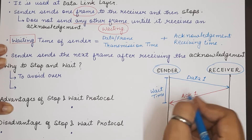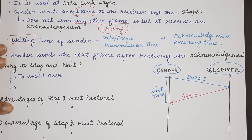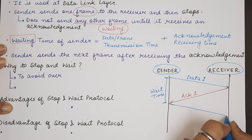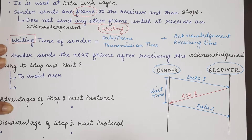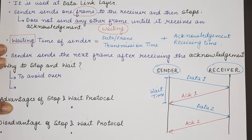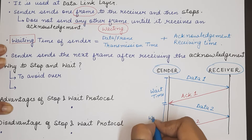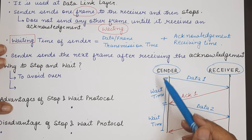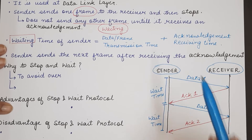Once the sender gets back ACK 1 — the acknowledgement of data 1 — the sender will generate a new data frame and send it to the receiver. Let us say this is data frame 2. Once the receiver receives this, the sender will get back the acknowledgement after some time, and again this duration the sender will spend waiting for the ACK of data 2. The sender is not doing anything unless and until it has received the acknowledgement of the previous frame it just sent.